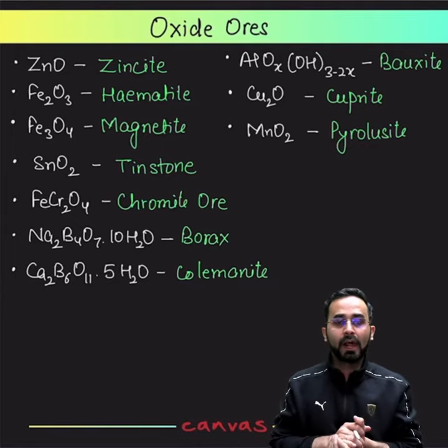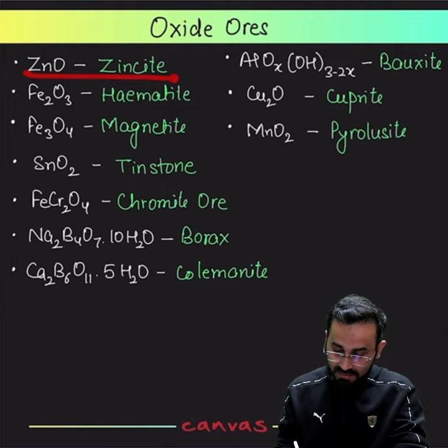Hello everyone, so let's just go over the list of oxide ores. ZnO Zincite, Fe2O3 Hematite, Fe3O4 Magnetite, SnO2 Tin Stone.